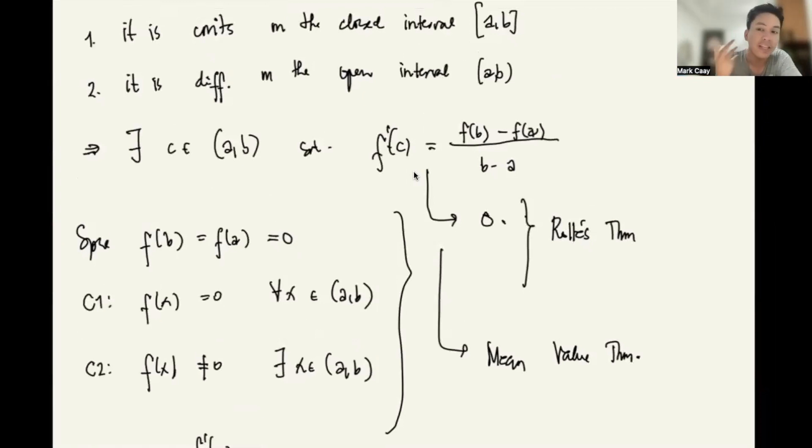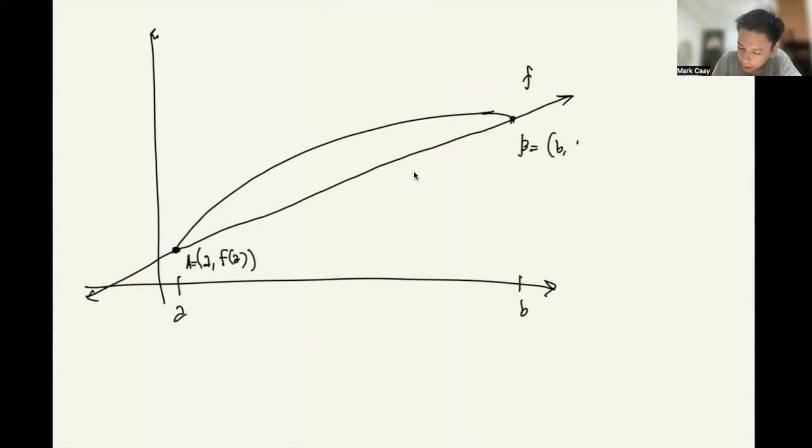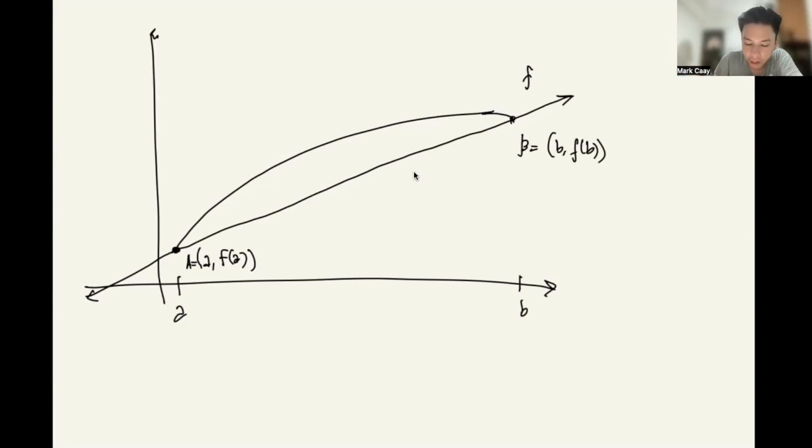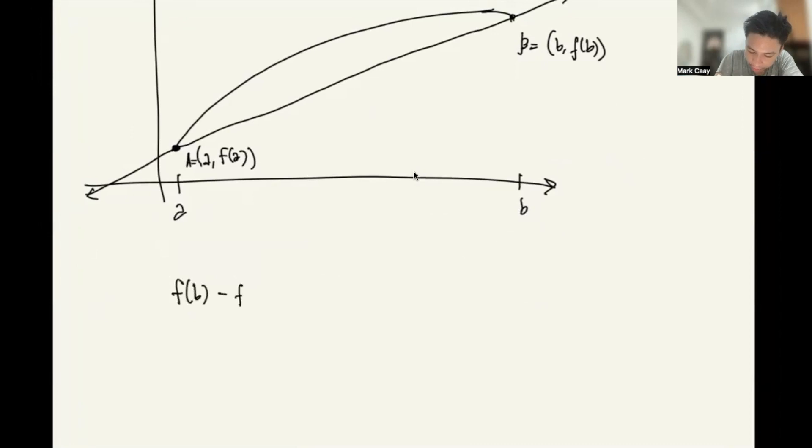How do we interpret this mean value theorem in general? Let's say you have a function f. Let's say this is your interval a, b. If we connect a line connecting these points here, let's say a equals (a, f(a)) and here is b equals (b, f(b)). So if we're trying to connect that, we can create a secant line to this curve. Observe that if we're trying to get the slope of the secant line, it's rise over run. So that is f(b) minus f(a) all over b minus a. This is f'(c) in our mean value theorem. So this is the slope of the secant line.